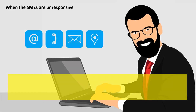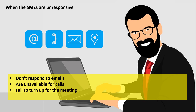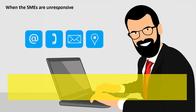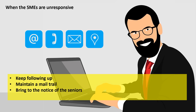When the SMEs are unresponsive — I'm sure this must have happened with most of you. Some SMEs simply don't respond to emails, are unavailable for calls, and accept meeting invites but fail to turn up. What should you do in this case? The first thing to understand is that such SMEs might be busy with other priority tasks. You need to keep following up with them. Maintaining a mail trail is a good idea, as you can later use it to request a different SME or justify any delays. Bringing this to the notice of the SME's seniors also works in some cases.